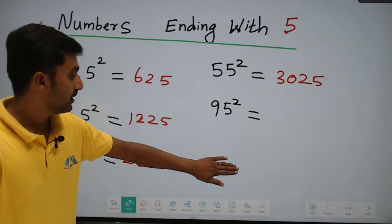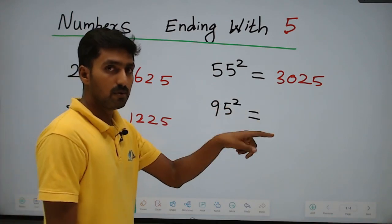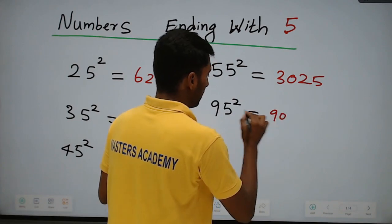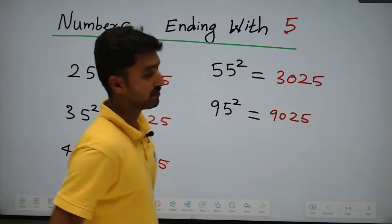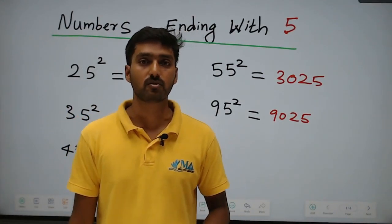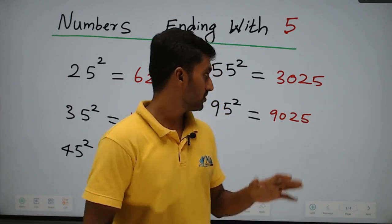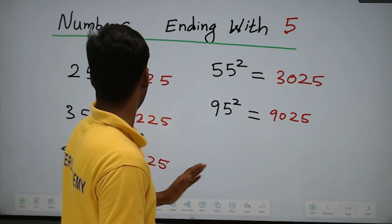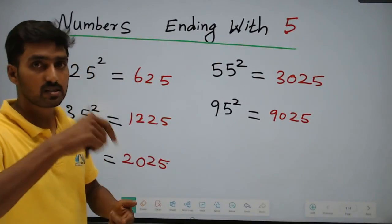For 95 squared: first digit is 9, next number is 10 — so 9 into 10 equals 90. Append 25 — answer is 9025. This same procedure works for any number ending in 5, such as 135 squared, 145 squared, 265 squared, and 745 squared.